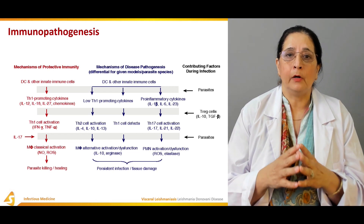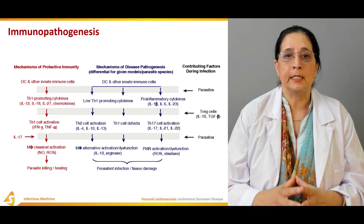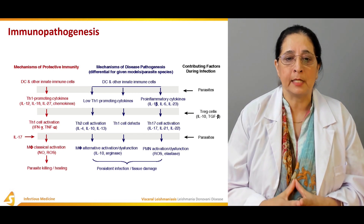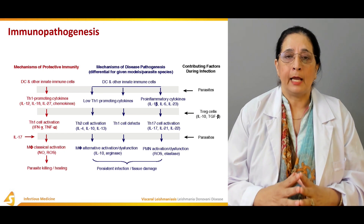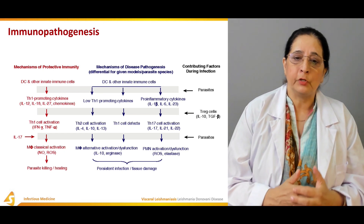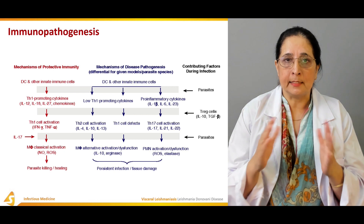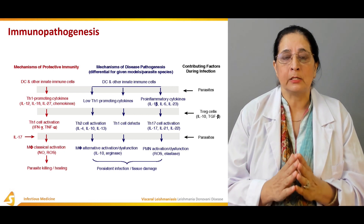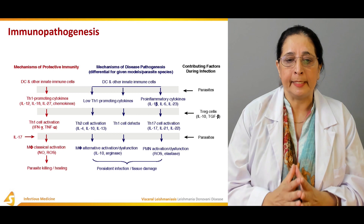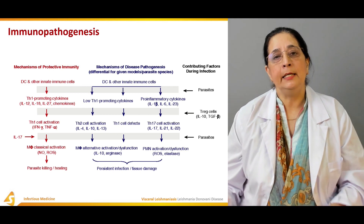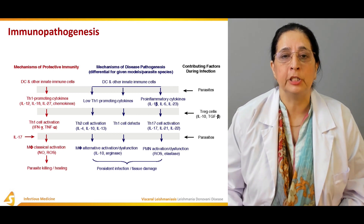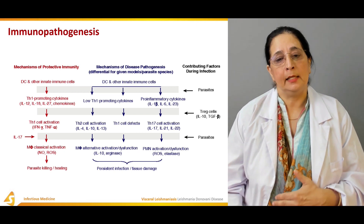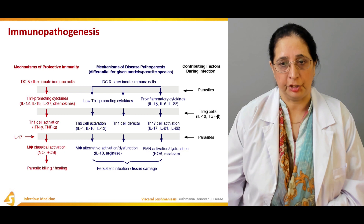This is how the disease progresses — inflammatory cytokines are released, but low TH1-promoting cytokines result in pathogenesis of leishmaniasis, ultimately leading to destruction of tissues as a result of infection and persistent infection.